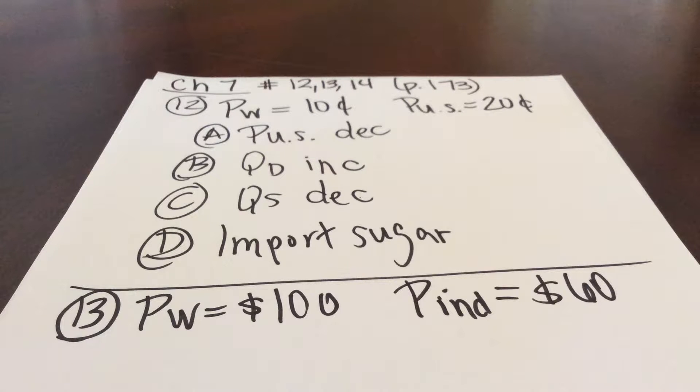I'm going to work some problems from chapter 7. This was our chapter on global markets. In this first recording, I'm going to work three basic problems, numbers 12, 13, and 14. This is on page 173 of edition 12. I'll have a second recording that I post where I work a more complicated problem.